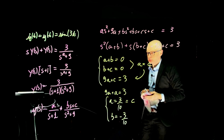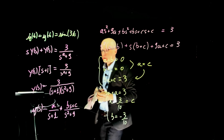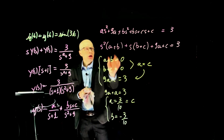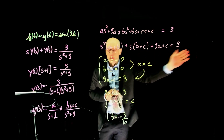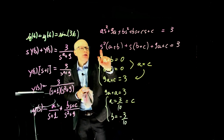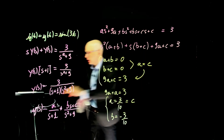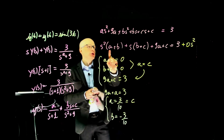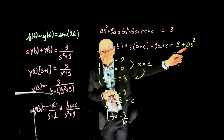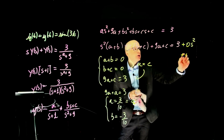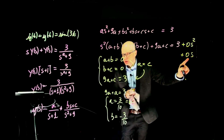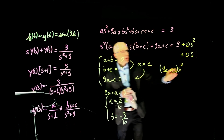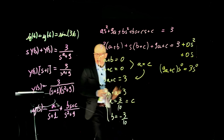Student question: how did you get A+B=0, B+C=0? So on this side, everything that multiplies s² is A+B. On the other side, we have zero times s². So equating coefficients: A+B = 0. Similarly, B+C multiplies s, and on the other side there's no s term, so B+C = 0. And 9A+C multiplies s⁰, which equals 3 on the other side.